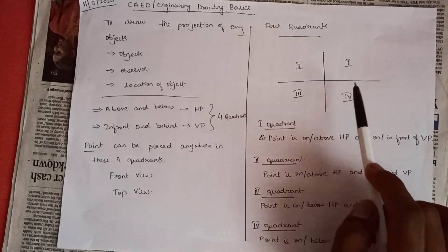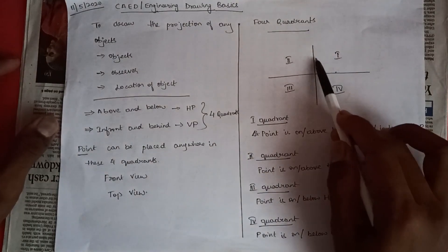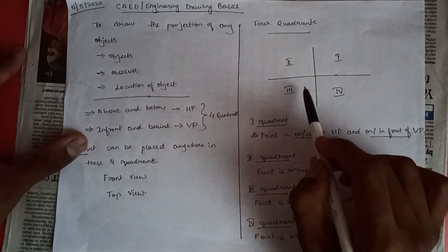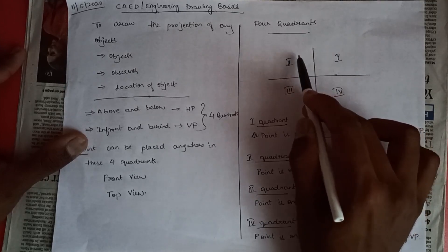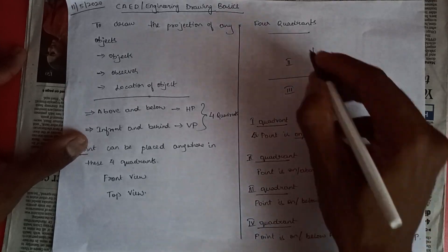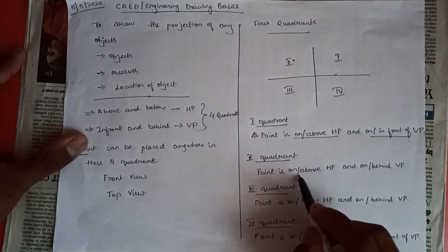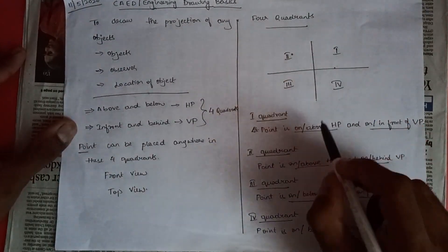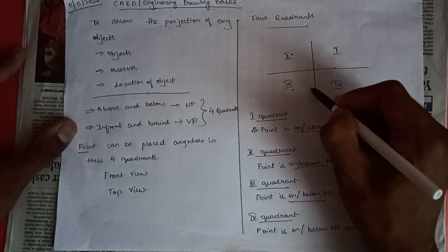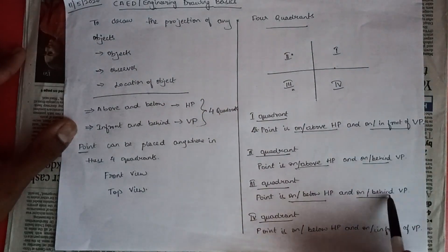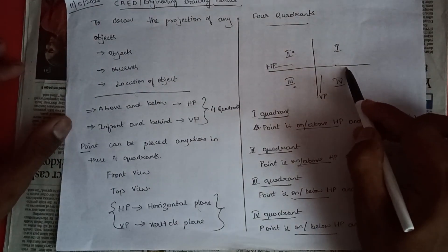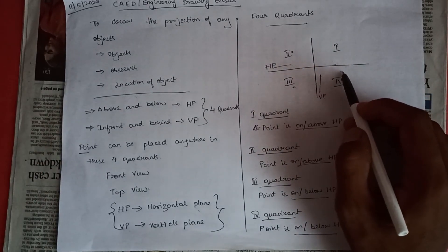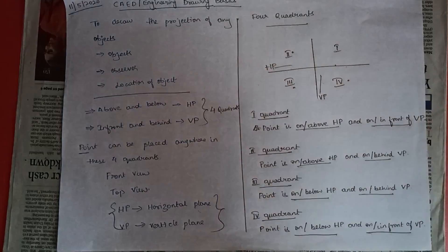When the point is on or above HP and on or in front of VP, it is in the first quadrant. When the point is on or above HP and on or behind VP, it is in the second quadrant. When the point is on or below HP and on or behind VP, it is in the third quadrant. When the point is on or below HP and on or in front of VP, it is in the fourth quadrant.